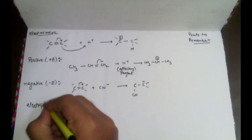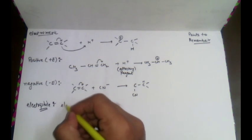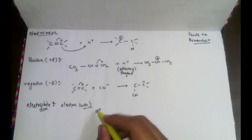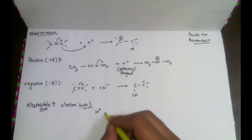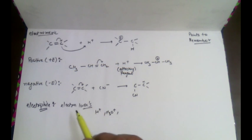Electrophiles are those which love electrons but are having a lack of electrons. This means they are electron lovers. They carry a positive charge or are electron-deficient species. For example, H⁺ is an electrophile because it has a lack of electrons.